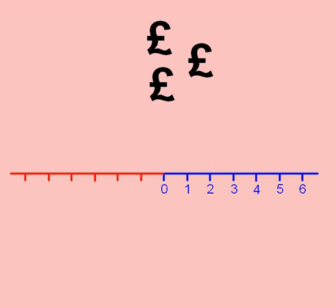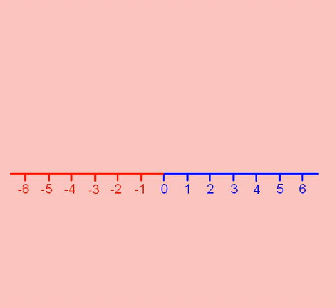When we started to use money, we realized that we could owe people money, so we needed to extend our number line backwards to include the negative numbers like minus 1, minus 2, minus 3 and so on.